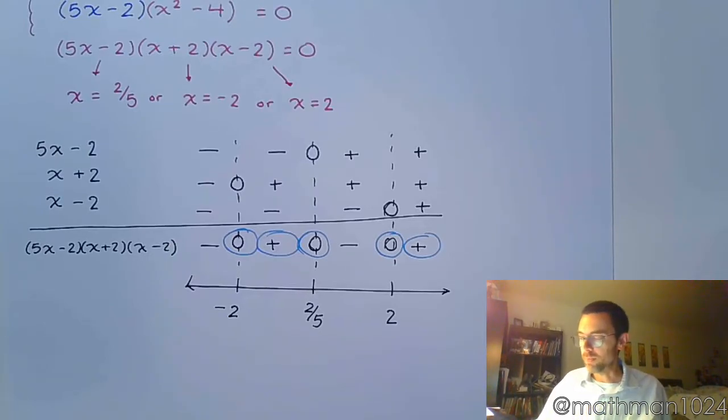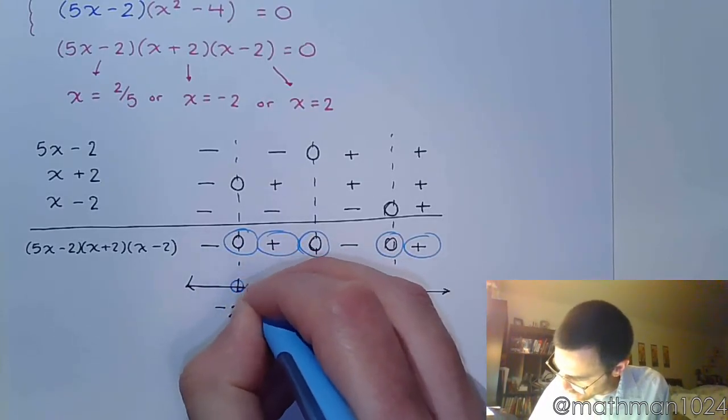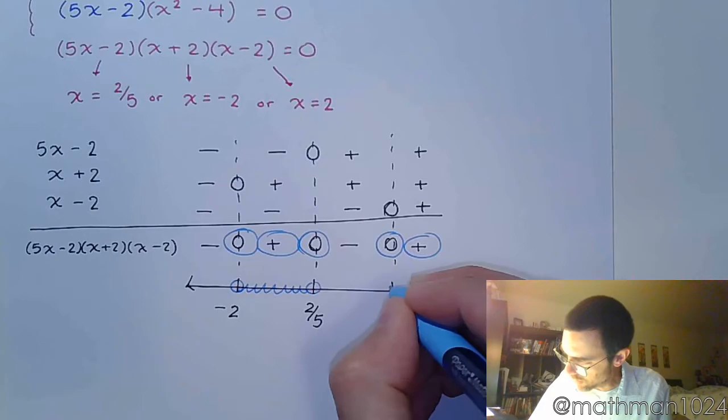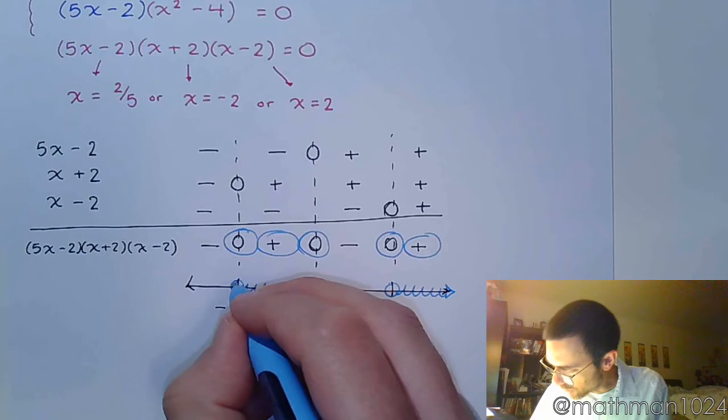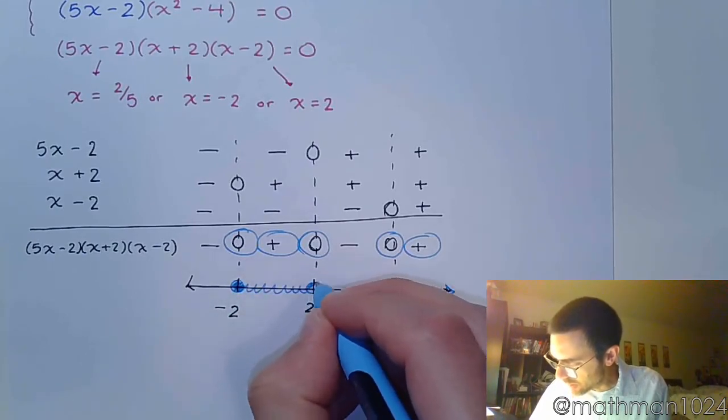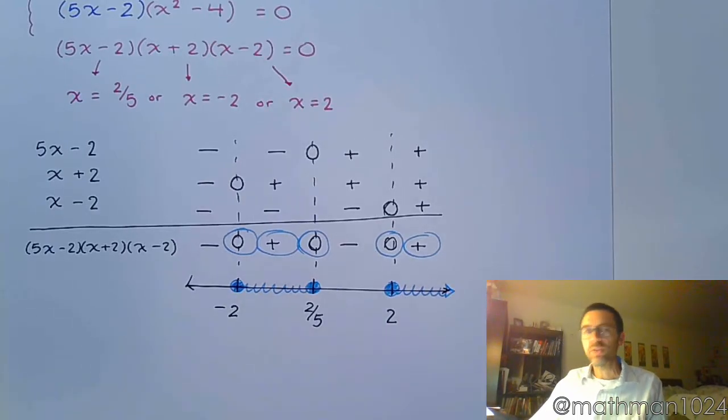So because it says greater than or equal to 0, that means we're talking about this region in between here and greater than 2. And we are also including all of these endpoints.